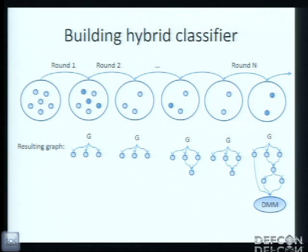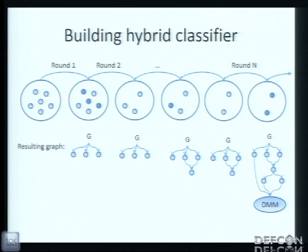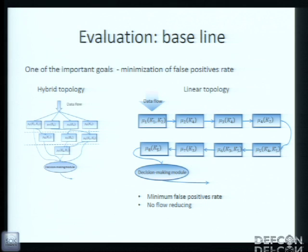If we put classifiers which run faster at the top of such topology, we can reduce the legitimate flow as fast as possible. We are given the set of elementary classifiers. At the next step, we choose from them such classifiers which provide complete coverage of shellcode classes detected by the entire set, and which are optimal in terms of false positive rate and execution time. Then we construct a lower result in graph and repeat that step. We end up with a decision-making model which analyzes all output from elementary classifiers and concludes the flow to be legitimate or malicious.